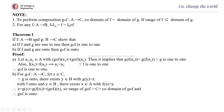Theorem 1: If F is a function from A to B and G is a function from B to C, show that if F and G are one-to-one then Gof is one-to-one. Suppose A1, A2 belong to A with Gof(A1) = Gof(A2), then G(F(A1)) = G(F(A2)). Since G is one-to-one, F(A1) = F(A2), which implies A1 = A2 since F is one-to-one. Therefore Gof is one-to-one.